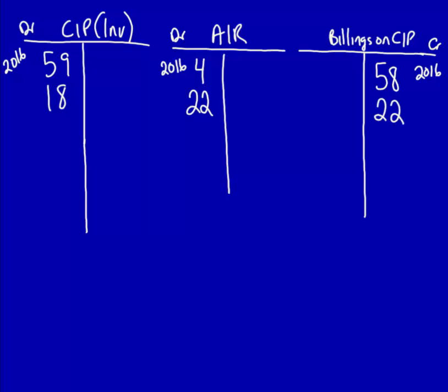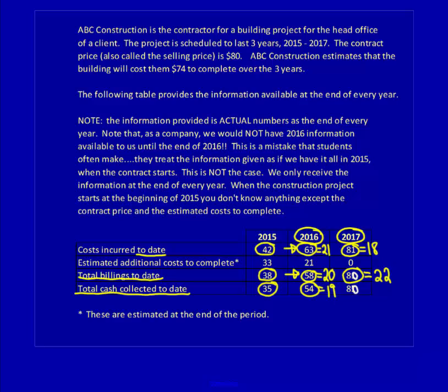Notice that the total in the billings on CIP is now $80. This makes sense as it's the end of the contract and we would have billed the client for 100% of the selling price of the contract. Now we have to figure out the cash paid in 2017. We have a year-to-date total of $80; year-to-date for 2016 was $54. The difference is $26.